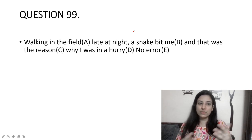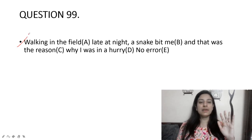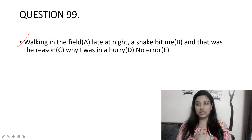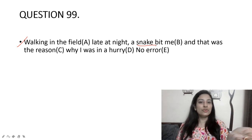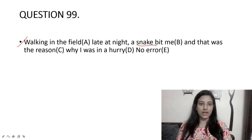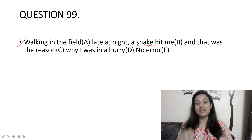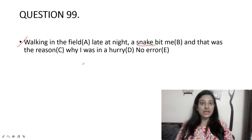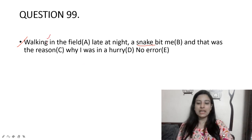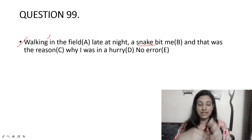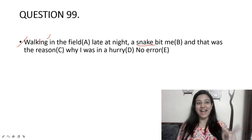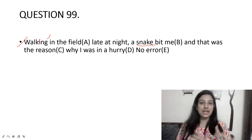Walking in the field late at night, a snake bit me and that was the reason why I was in a hurry. Whenever you begin with a present participle, you always need a clear subject for it. Right now the sentence implies the snake was walking in the field — which is wrong. The sentence must be changed to 'While I was walking in the field late at night, a snake bit me,' so that the subject is correct. Snakes don't walk anyway!